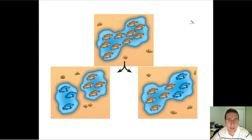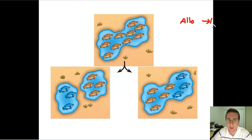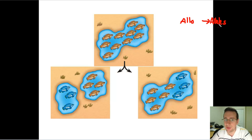Before you get there, let's do some Latin. Allopatric — the word 'allo.' Have you heard this prefix somewhere? In biology, we already learned something very similar: alleles, different versions of the same kind of gene. So 'allele' here means different. That's actually what 'allo' means — it means different.